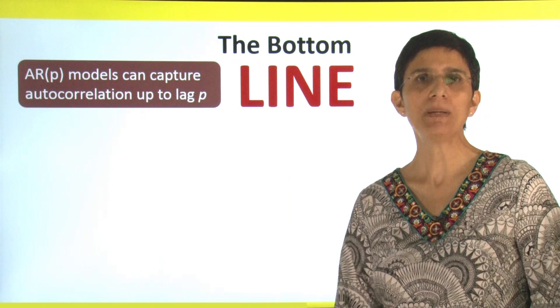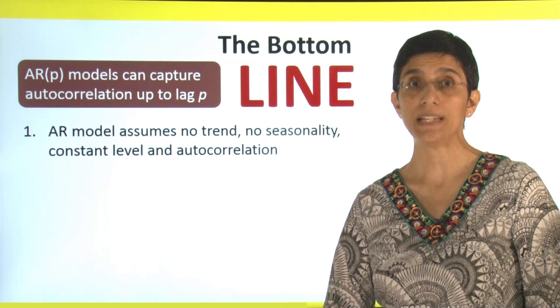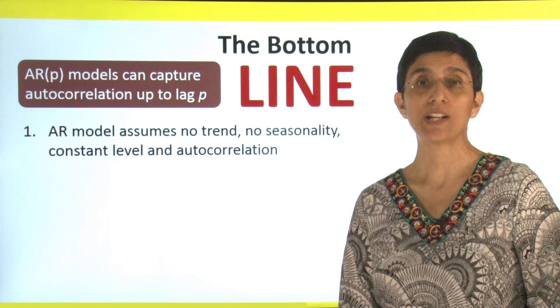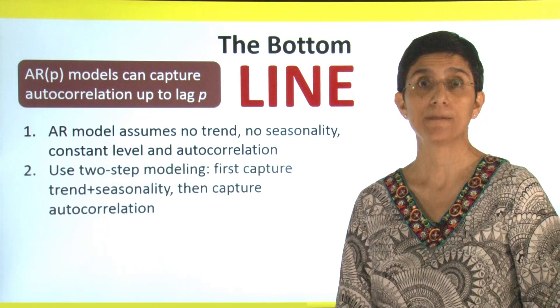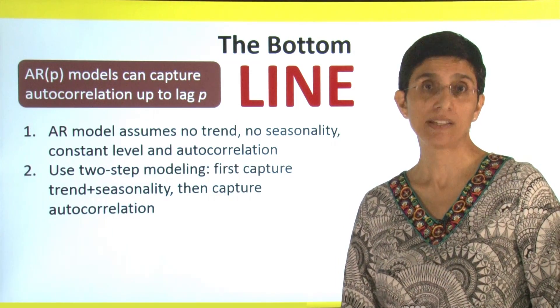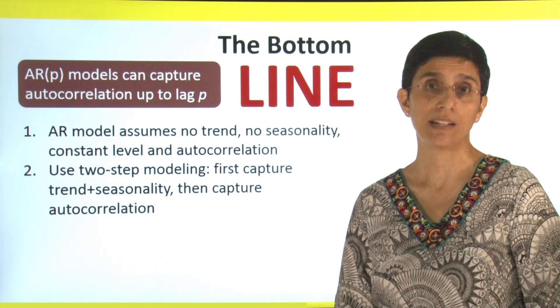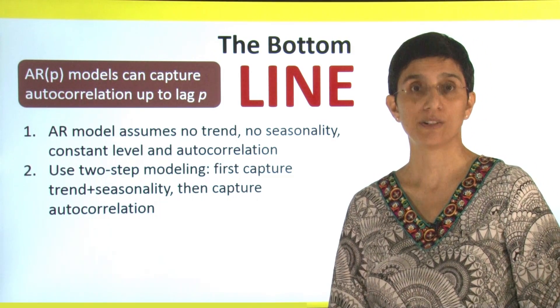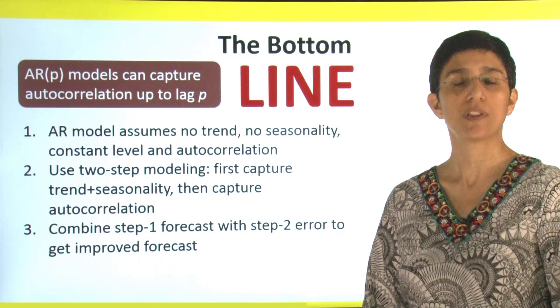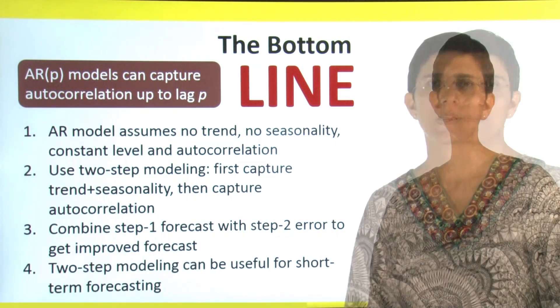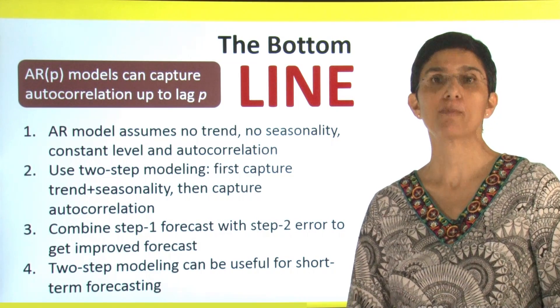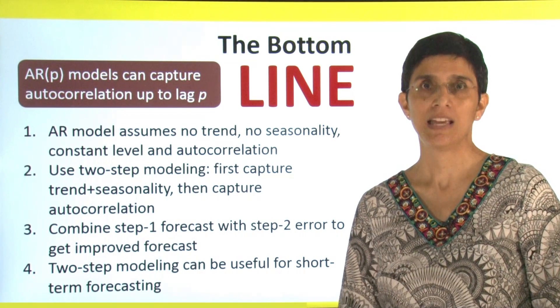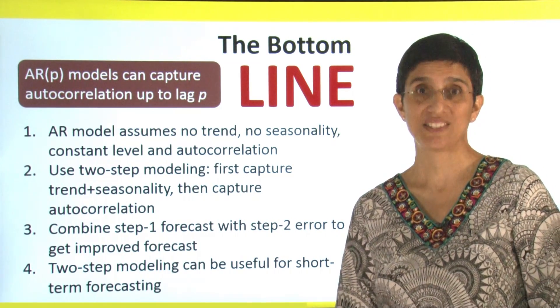To summarize, AR(p) models can capture autocorrelation up to lag p. The AR model assumes that there's no trend, no seasonality, and that the level and autocorrelation remain constant throughout the period. We looked at a two-step modeling approach where we first capture trend and seasonality, say with a regression model or any other model, and then we capture autocorrelation by looking at the forecast errors. Then, we combine the step one forecast with a step two error and get our improved forecast. This two-step modeling approach can be useful for improving short-term forecasts, but remember that they're not typically useful for longer-term forecasts. And remember to check whether the effort is warranted or not.